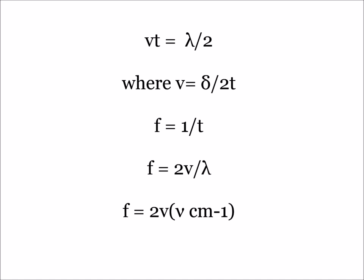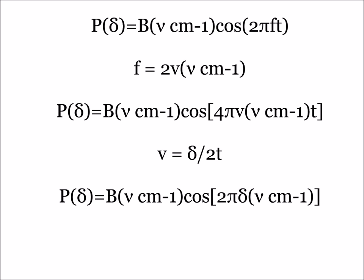This equation can further be simplified by rewriting the previous equation as f equals 2v times nu, where nu is in wavenumbers, and one can see the frequency of the interferogram is proportional to the frequency of radiation. The final equation for frequency is important for the conversion of the time domain to the frequency domain.